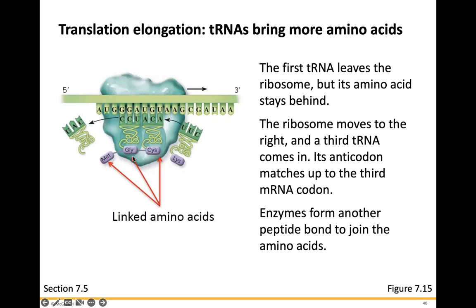The ribosome moves along, and the third transfer RNA comes in — its anticodon matches up. For example, if the codon is UGU, the complement anticodon is ACA, bringing a cysteine that bonds with glycine. Enzymes form another peptide bond to join the amino acid. The next codon is AAG, with anticodon UUC carrying lysine, which bonds with the previous amino acid, and so on down the entire strand.